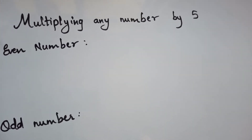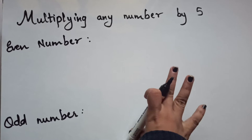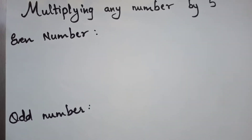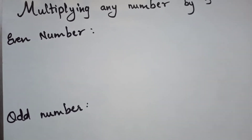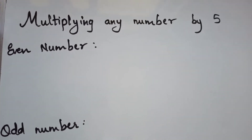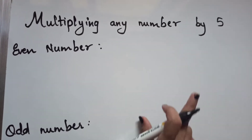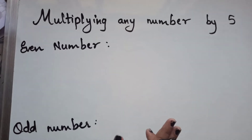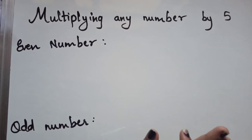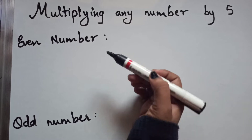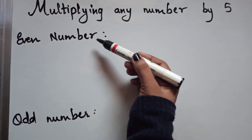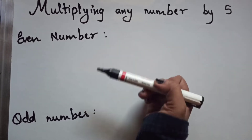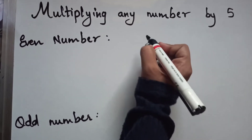The third trick is multiplying any number by 5. There are two cases — even numbers and odd numbers. Follow these steps and you will get answers quickly.